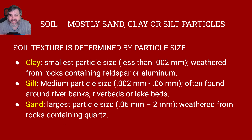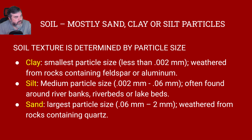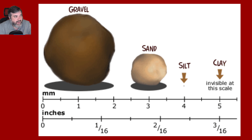Soil is mostly going to be sand, clay, or silt, and the soil texture is determined by the size of the particles. Clay is the smallest — I usually think of clay being the largest, but it's actually the smallest. It's weathered from rocks containing feldspar or aluminum. Silt is medium and is often found around riverbeds. Sand is the largest particle size. To put things in perspective: gravel is much bigger, then sand, then silt, then clay, which is way too small to see.